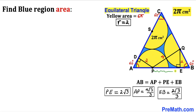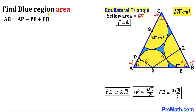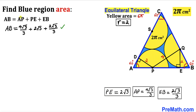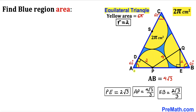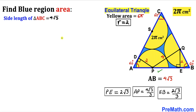Recalling AB = AP + PE + EB and substituting the values: AP = 4/√3, PE = 2√3, and EB = 2√3/3. Adding these fractions gives AB = 12√3/3, which simplifies to AB = 4√3 cm. This is the side length of triangle ABC.